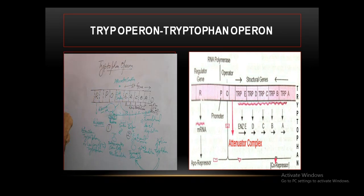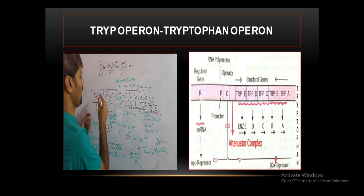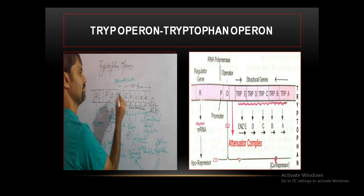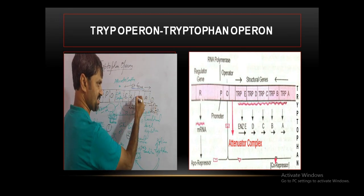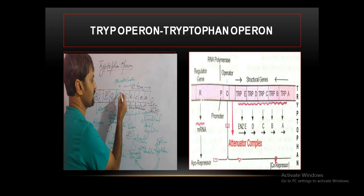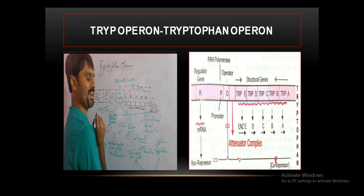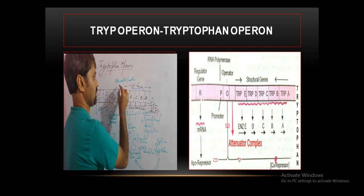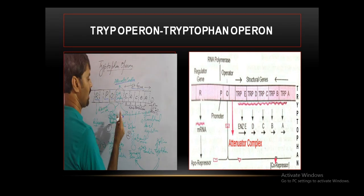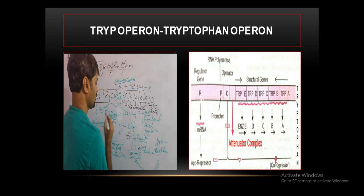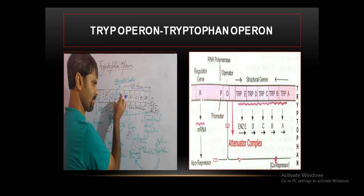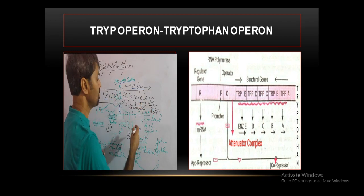Let us now discuss the leader attenuator complex in the tryptophan operon. This diagram shows the DNA with the genes: structural genes A, B, C, D, E, operator gene, promoter gene, and regulator gene. Most importantly, between the operator and structural gene there is the leader attenuator complex. This DNA region undergoes transcription to produce a messenger RNA, which has specific segments.